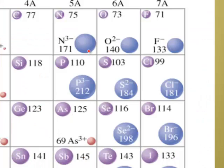The exact opposite is going on with anions. Nitrogen forms a minus-three charge, and the nitrogen ion got bigger — really bigger. Oxygen only forms a two-minus charge, so it wasn't quite as big as nitrogen. Fluorine only forms a one-minus charge, so it didn't get quite as big as oxygen. So for cations, the more positively charged, the smaller; for anions, the more negatively charged, the larger.